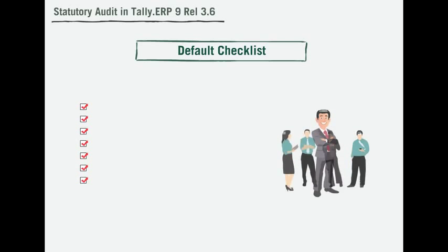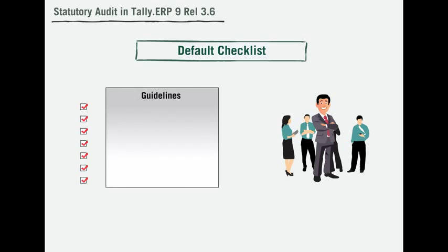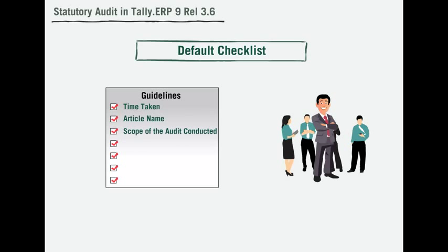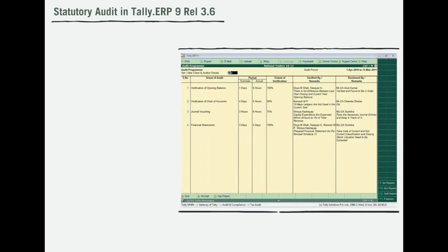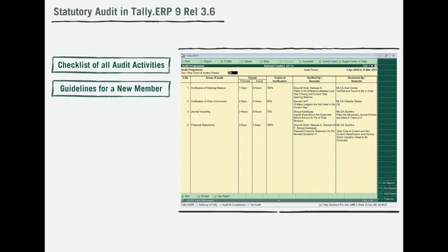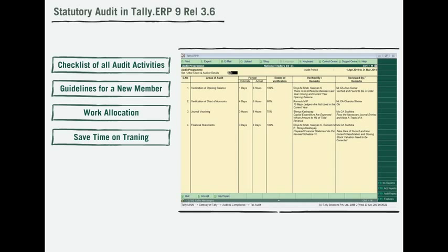The system also creates a default checklist that will help the entire audit team follow set guidelines while conducting the audit. Details like time taken, article name, scope of the audit conducted, and post-audit comments are also captured. From the audit program you can conveniently create a checklist of all audit activities, guidelines for a new member, allocation of area of work, and more — saving time even on training a new member.